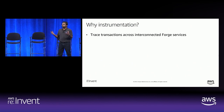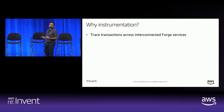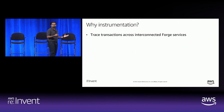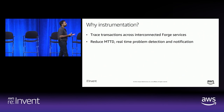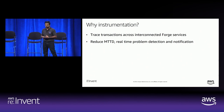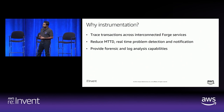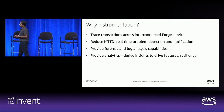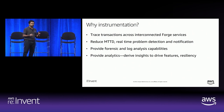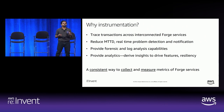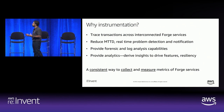We came up with Instrumentation Service to be able to trace transactions across the interconnected Forge services, to detect problems in real time — thus reducing MTTD and notifying upon them — to provide forensics and log analysis capabilities, and to provide analytics to derive insights for features and resiliency. To summarize, we wanted a consistent way to collect and measure metrics of our Forge services.